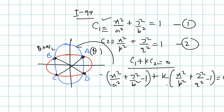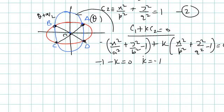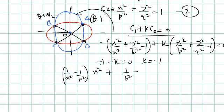To find the value of k for the pair of lines, we note that the pair of lines passes through the origin. Substituting (0, 0) into the family equation gives −1 − k = 0, so k = −1. Only the pair of lines can pass through the origin among the family members.